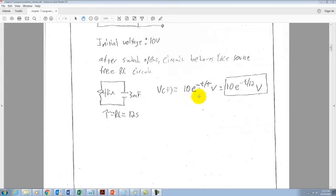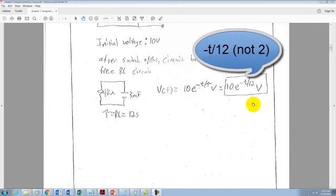And we put this into the standard form, which is V of T equals the initial voltage times E to the negative T over tau. Plugging in our initial voltage of 10 and our tau value of 12, we get V of T equals 10 E to the negative T divided by 12 volts.